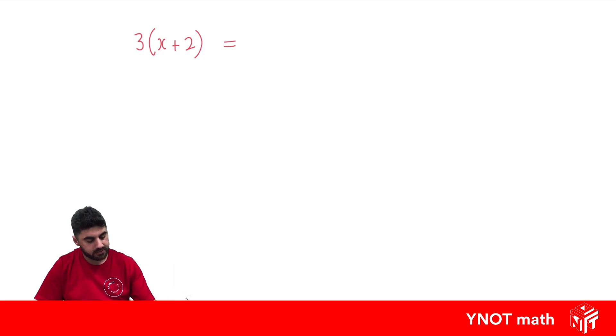We know how to expand because we multiply out the term at the front by everything in the bracket, and that gives us 3x plus 6. We know this is called expanding.